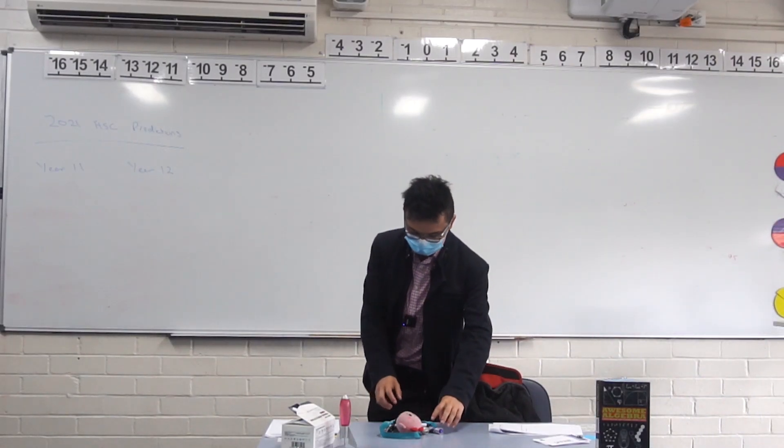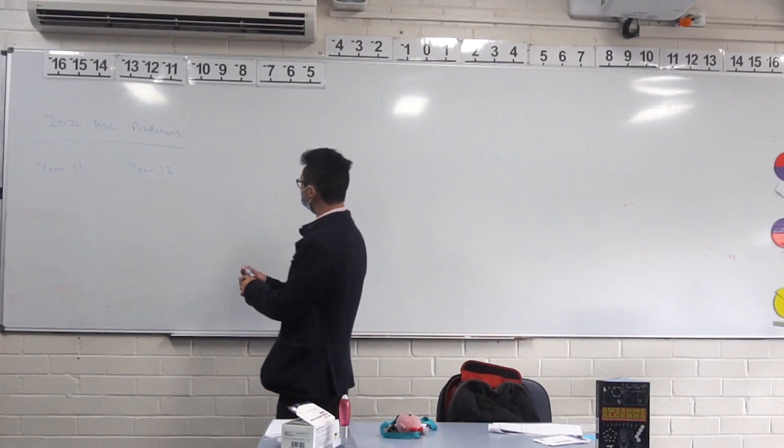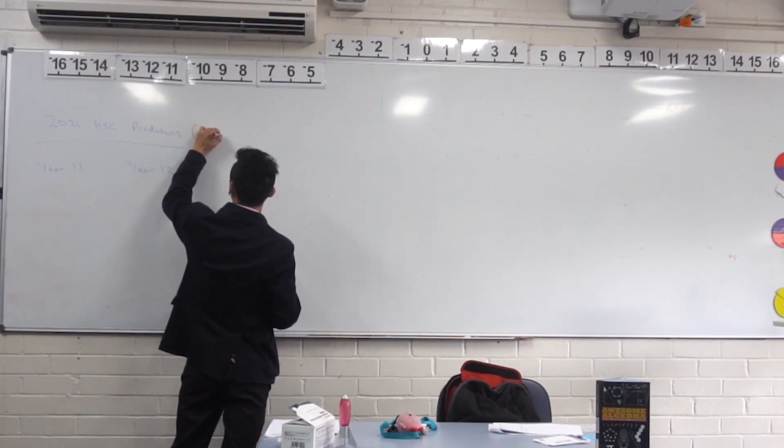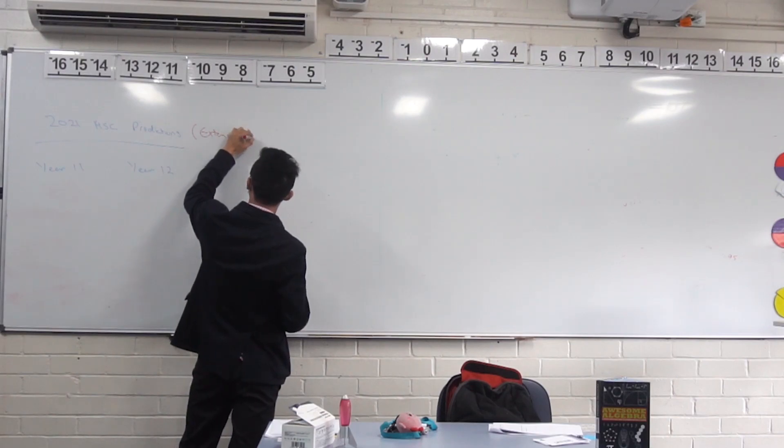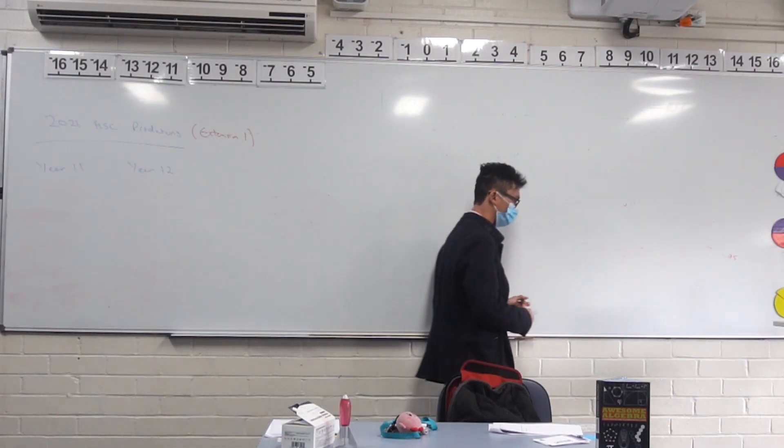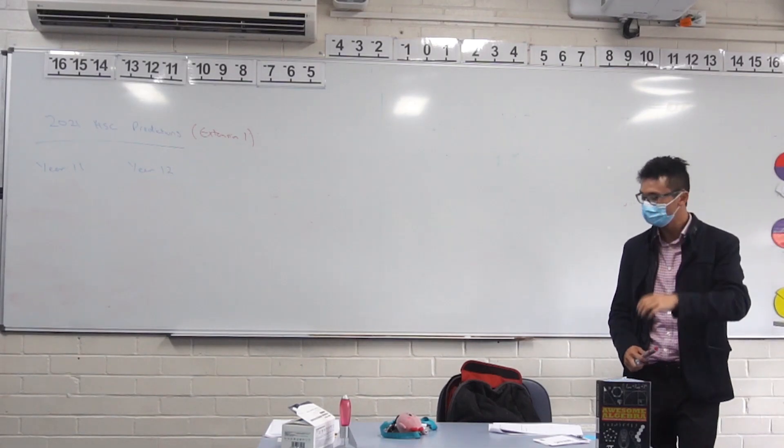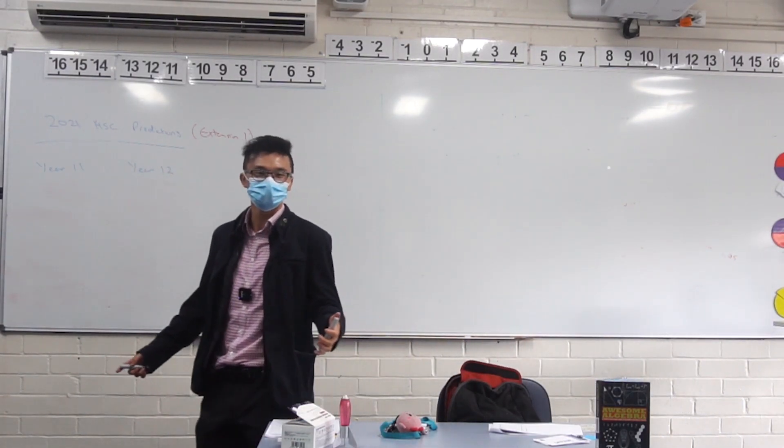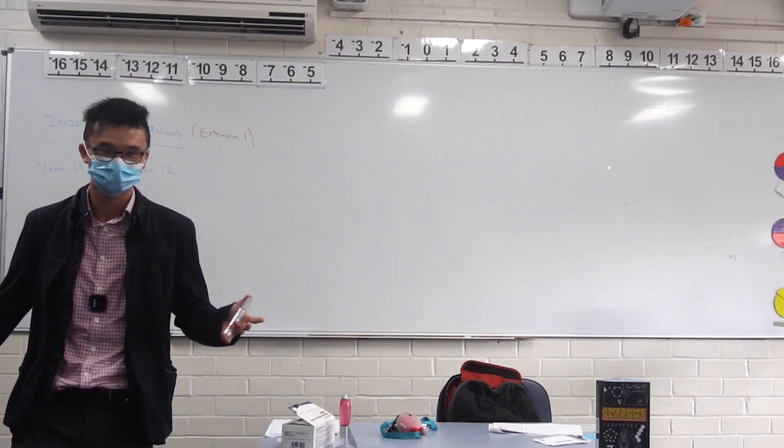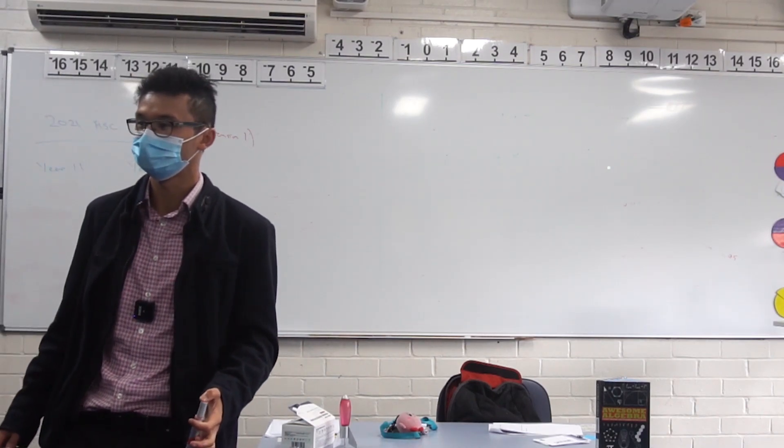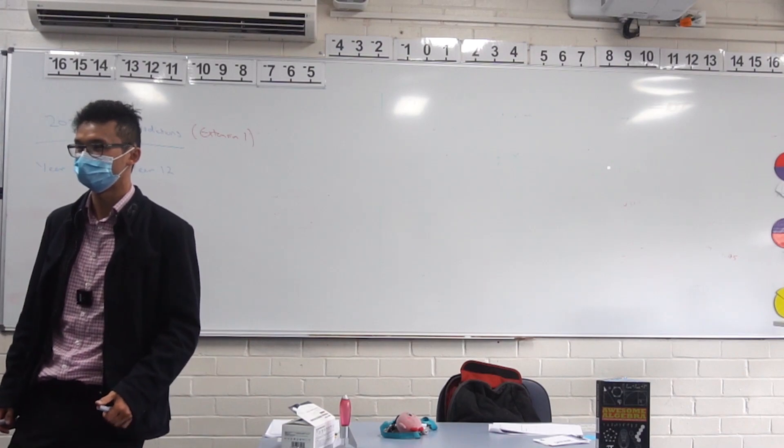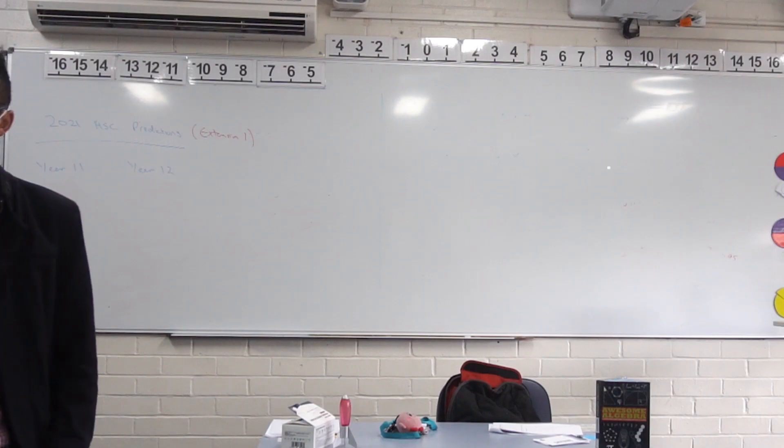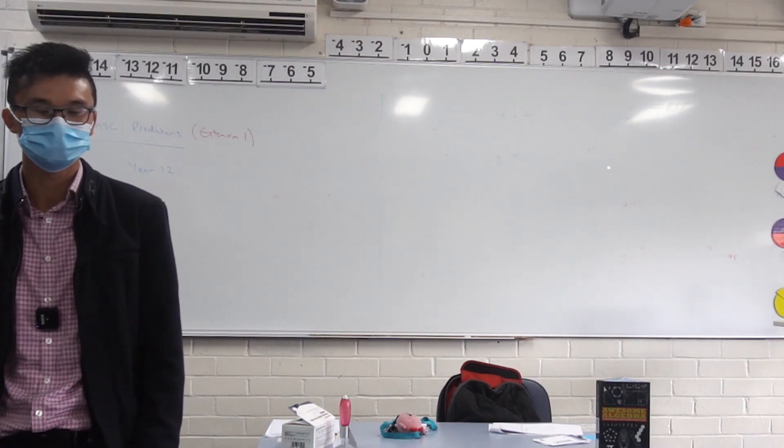All right, let's have a quick look at my HSC prediction extension one, the extension one edition. This time I won't be trying to look up the 2021 paper because I know it doesn't exist. Year 11, Year 12, what's the split? Do we think it's same or different to Advanced? What do we think, 40-60? What was Advanced? It was like 38.62, something like that, 32.68.